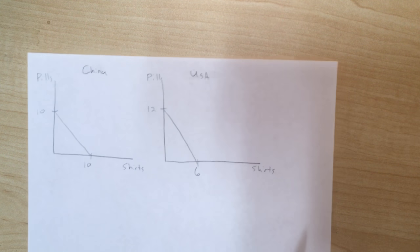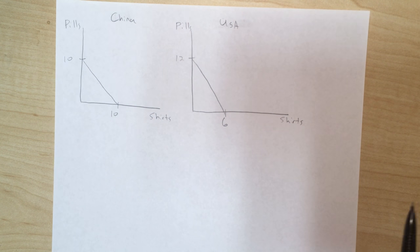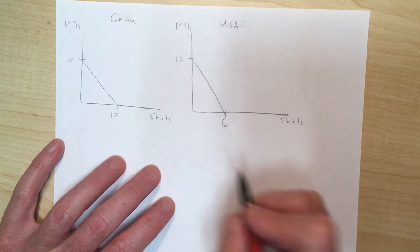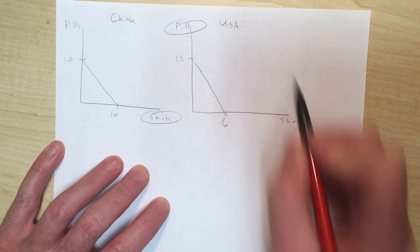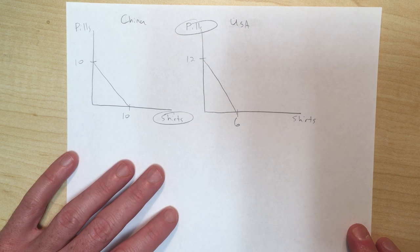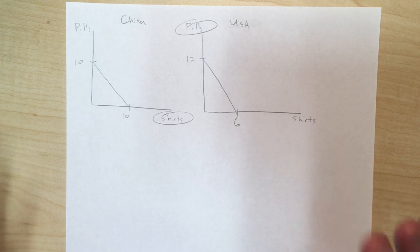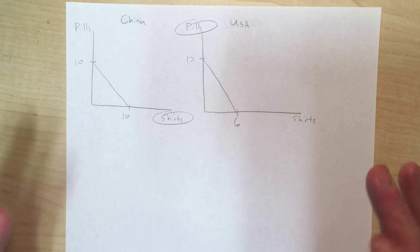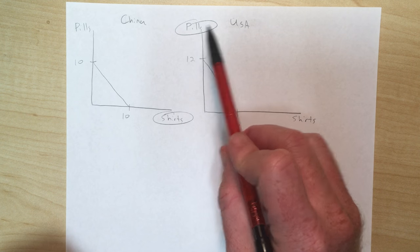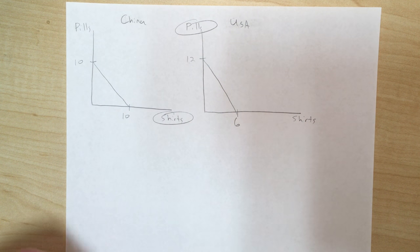I'm going to start with a clean sheet and circle shirts for China and pills for the US to remember which country has the comparative advantage. In this case, the absolute advantages and the comparative advantages match up exactly the same — the US has both the absolute and comparative advantage in pills, and China has both for shirts.